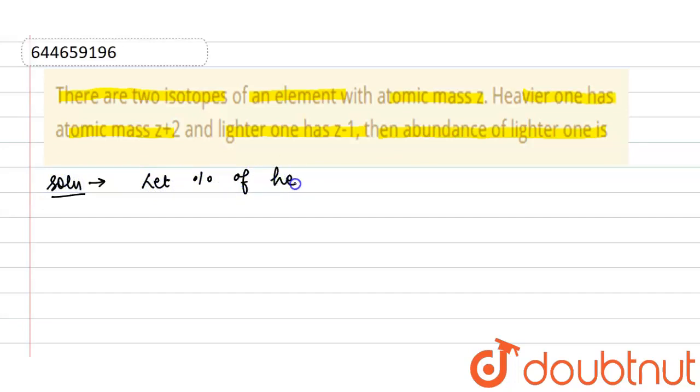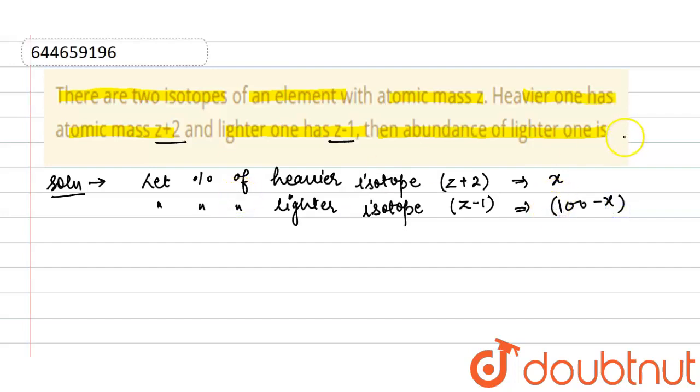the heavier isotope with atomic mass z+2 suppose it is x. Let the percentage of the lighter isotope with atomic mass z-1 be equals to 100-x. This means total abundance is 100%. Suppose for the heavier element it is x, and for